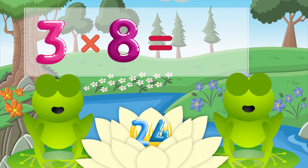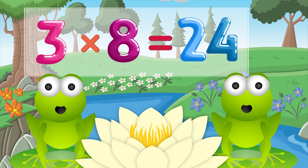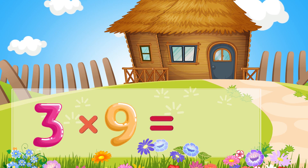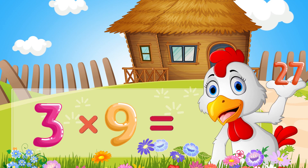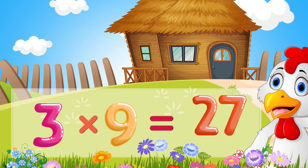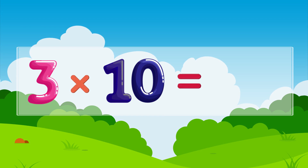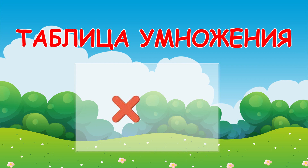Three times eight is twenty-four. Three times nine is twenty-seven. Three times ten is thirty. Well done!